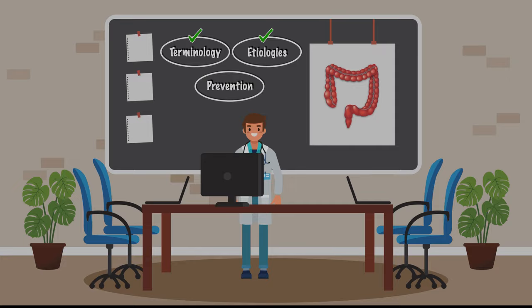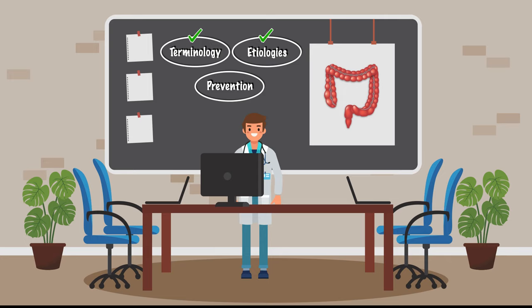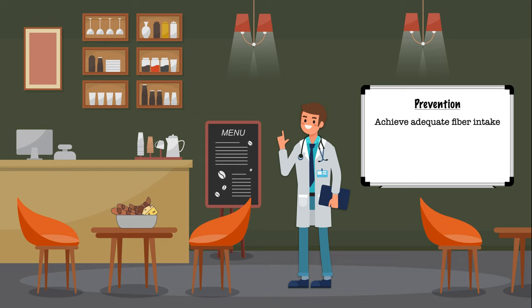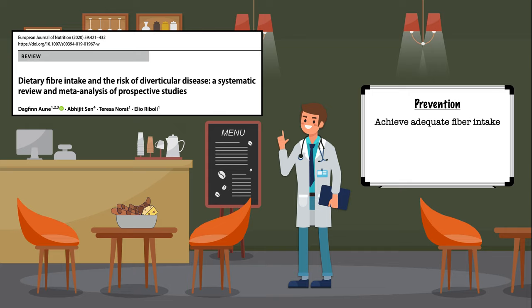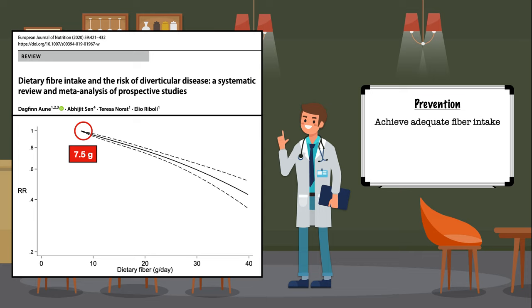We've seen a breakdown of the terminology for diverticular disease and explored some of the possible etiologies. Next, we're going to talk about diet and lifestyle recommendations for prevention. For prevention, there's enough evidence to support a recommendation to achieve adequate fiber intake. A 2020 meta-analysis of five prospective cohort studies revealed a dose-response relationship between total fiber intake and risk of diverticular disease. Compared to an intake of 7.5 grams per day, an intake of 30 grams per day reduced risk by 41%, while an intake of 40 grams per day reduced risk by 58%. Because there's insufficient data beyond 40 grams per day, we cannot say that going above this amount offers additional protection.